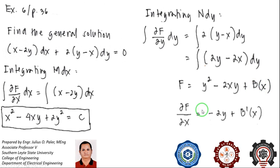Now the second step is to differentiate F with respect to X. Of course, this is partial differentiation because F has a Y variable. If you differentiate this with respect to X, Y is a constant, so Y squared will be zero, minus 2Y, and B of X will be B prime of X.